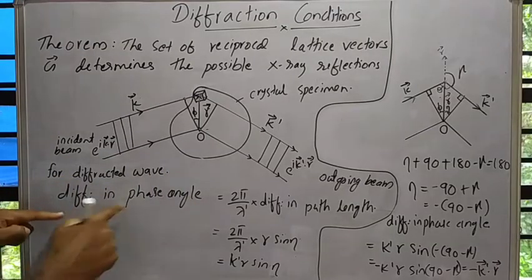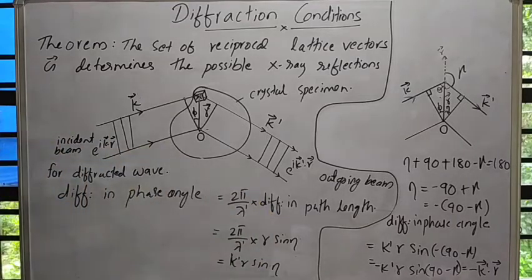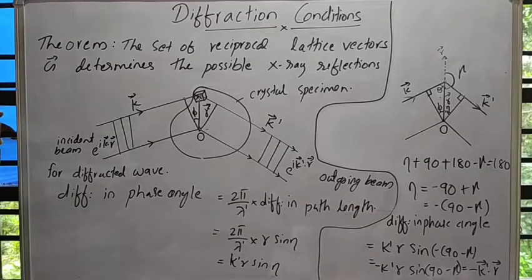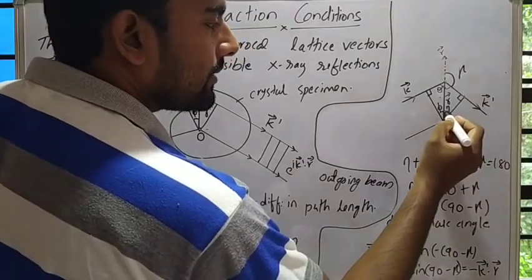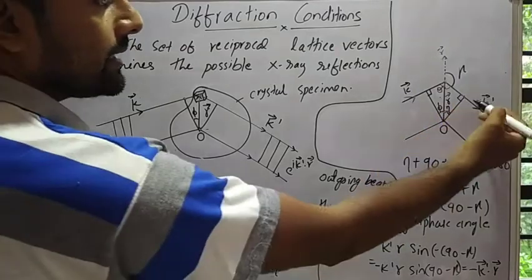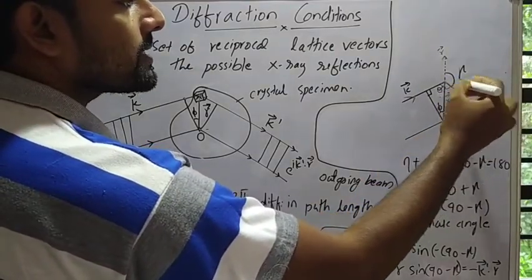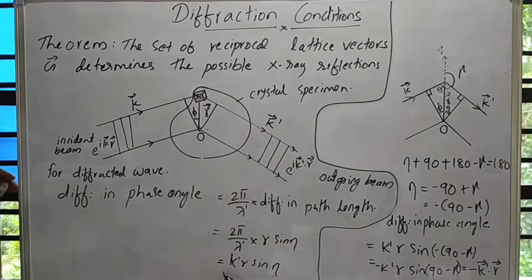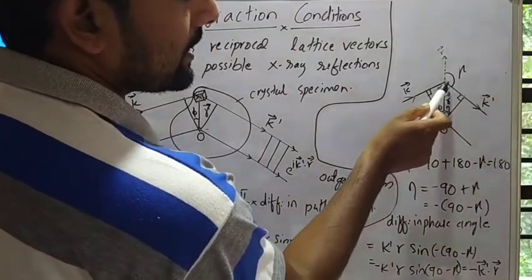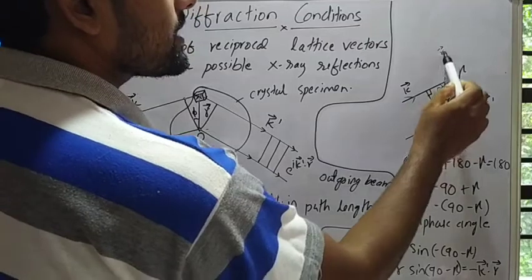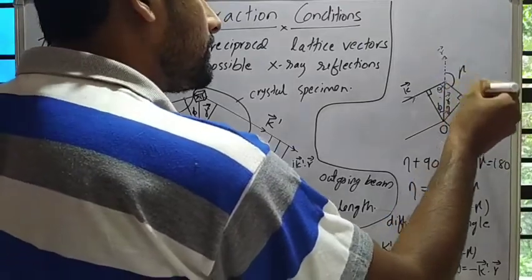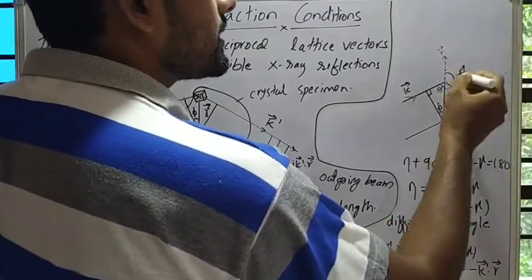For the diffracted wave, the difference in phase angle equals 2π over λ', where λ' is the wavelength of the outgoing beam, times the difference in path length. Taking the angle as η, the difference in path length gives 2π over λ' times r sinη, which equals k'r sinη. The angle between the wave vector k' of the outgoing beam and the position vector r is γ.